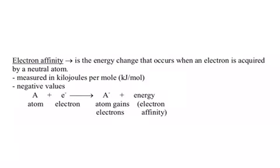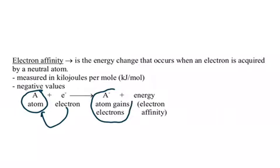Now we have one more trend that's very similar to electronegativity, and this one's called electron affinity. Electron affinity is an energy change that occurs as a result of an atom gaining an electron. Here, a neutral atom gains an electron and as a result becomes an anion — negatively charged. When that electron is added, there's an energy that is released, and that energy change is called electron affinity.